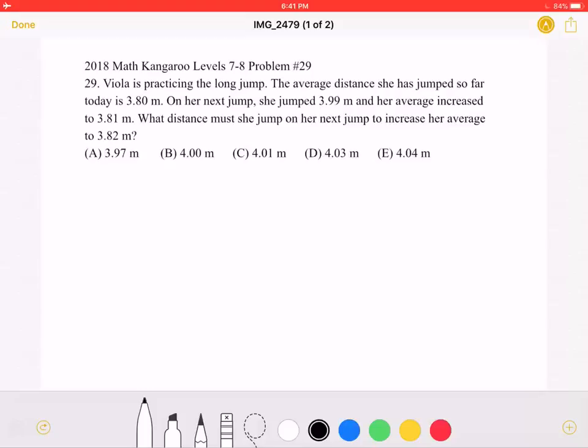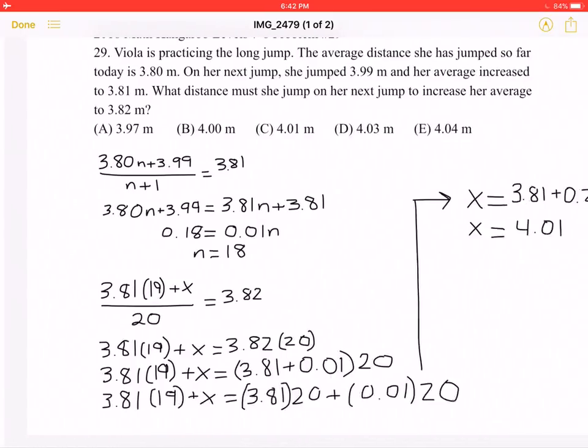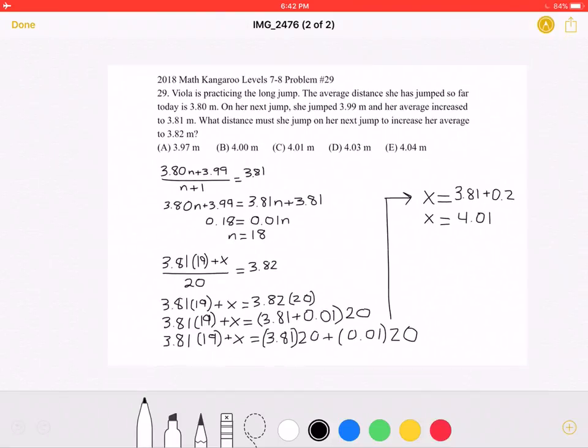What is the distance she must jump on her next jump to increase her average to 3.82 meters? This is the problem as it originally appeared on the test, and here is where we'll be doing the solution.